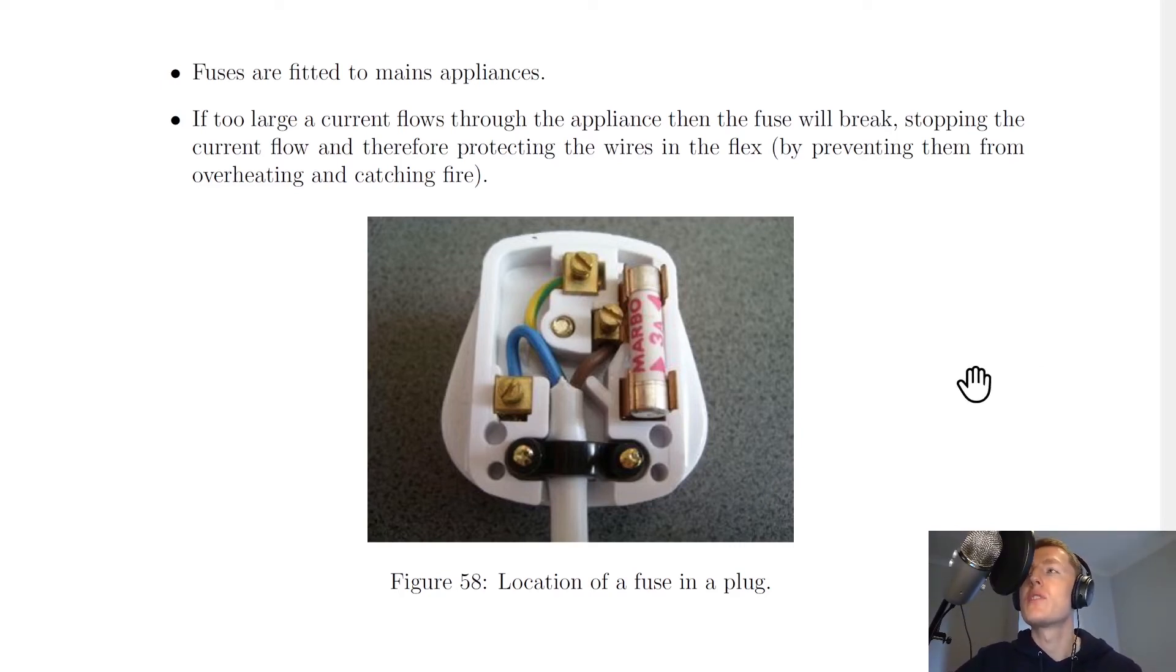Another way to think about this is that if too large a current flows in a circuit, then it's likely that the appliance will already have stopped working or failed. So if the fuse then breaks after that, your appliance will still no longer be working. So the main purpose of the fuse is to protect the wires in the flex from overheating and catching fire, and this in turn prevents the device itself, the appliance, from overheating.